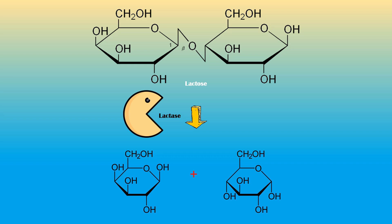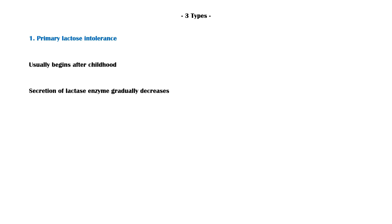Lactose intolerance can be divided into three types according to the underlying pathology. Primary lactose intolerance typically occurs due to aging and usually begins after childhood. Secretion of the lactase enzyme in these people gradually reduces over time.